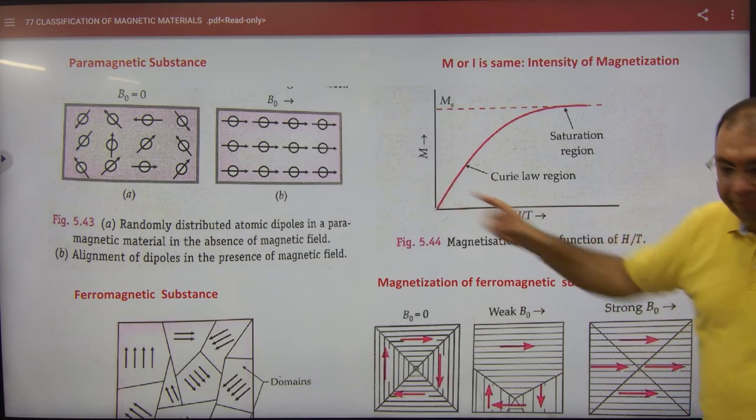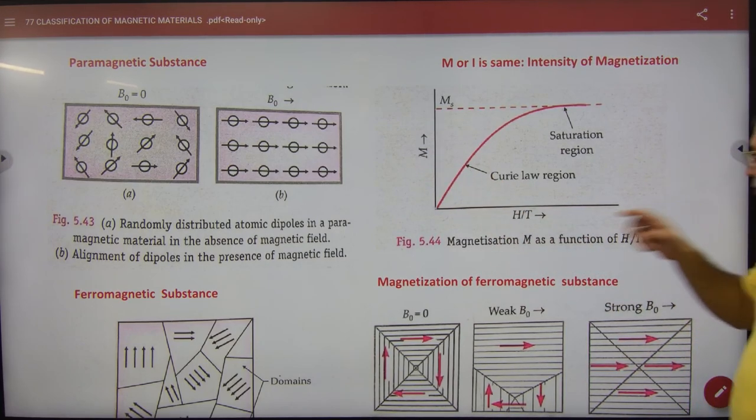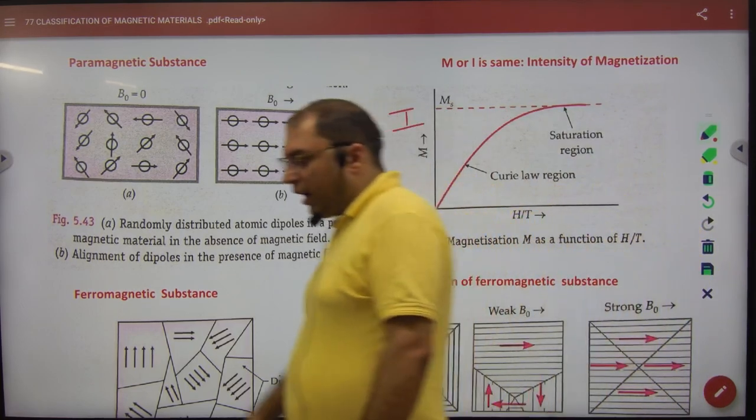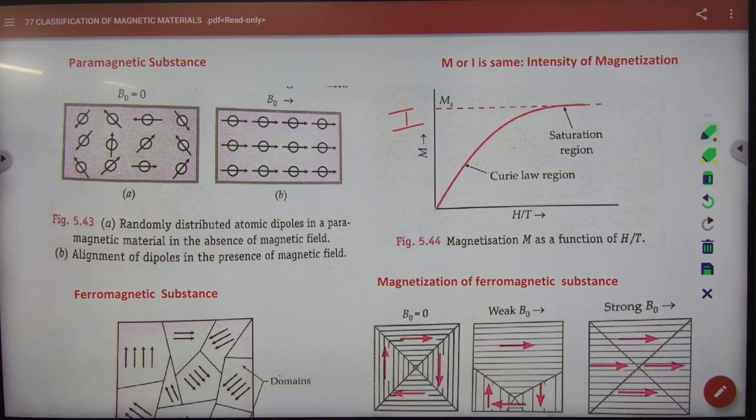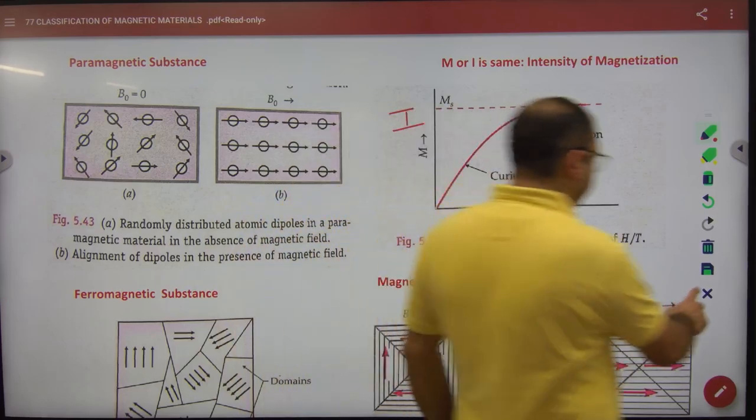Where M is I. No, you have magnetic dipole moment. You write I. I and H by T. The graph is the variation. Curie's law. If you want to mark the graph, then write it. And what? Next.